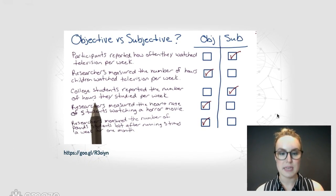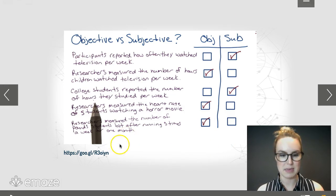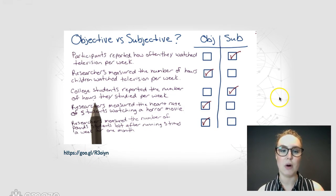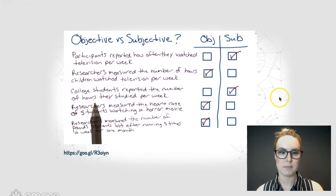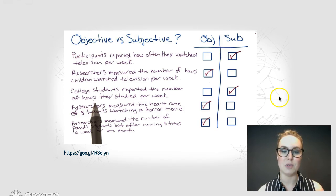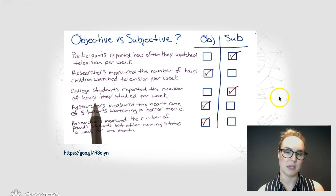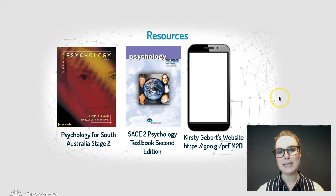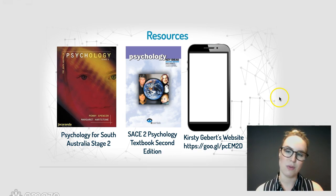Here are some more examples — follow the link at the bottom for more detail. 'Participants reported how often they watch television per week' is subjective, based on their own response. 'Researchers measured the number of hours children watch television per week' is objective — same situation, one subjective and one objective. Press pause to browse through. For more information, please see the textbooks or the website. See you!